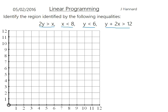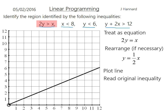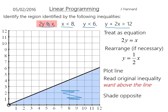First, let's think about 2y is greater than x. Treat it as an equation — 2y equals x, forget the inequality for now. Rearrange so we get y on its own: y equals a half of x. Plot the line with a gradient of a half going through the origin. Now go back to the inequality: it wants to be greater than, so that's really saying it wants to be above the line. So we shade the opposite — we shade the lower part here. We want to be above the line, so we shade below.